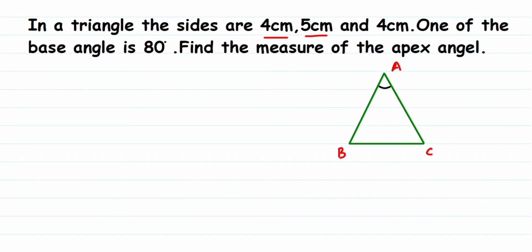and again 4 centimeters. If you see here, two sides are equal, which means the triangle is an isosceles triangle. So here this will be 4 centimeters, this is 4 centimeters, and let us assume this is 5 centimeters.